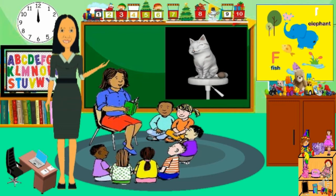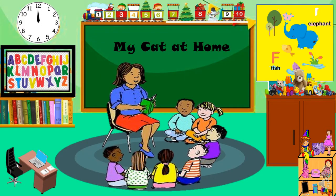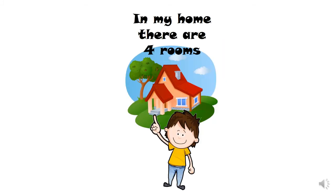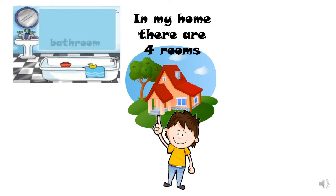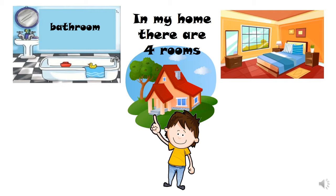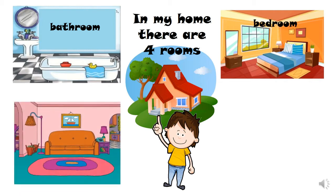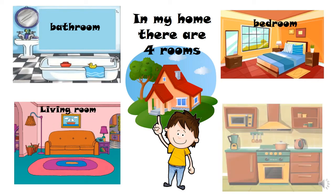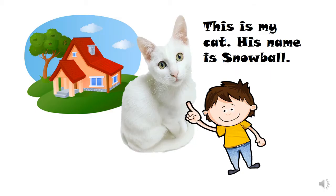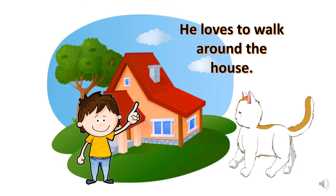Do you know what a cat is? You are correct — cat! This is my home. In my home there are four rooms: bathroom, bedroom, living room, and kitchen. This is my cat. His name is Noble. He loves to walk around the house.